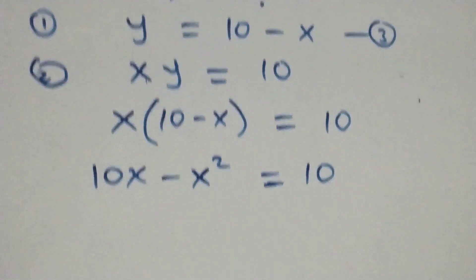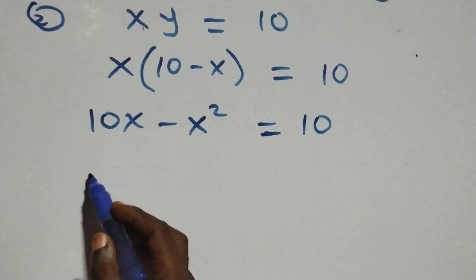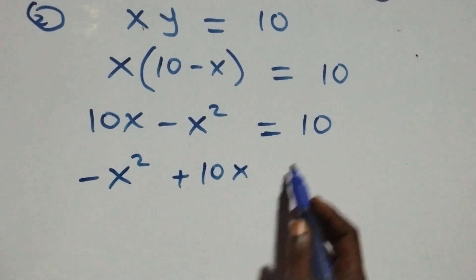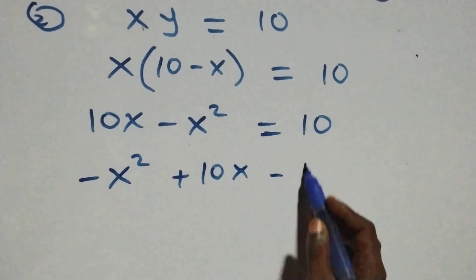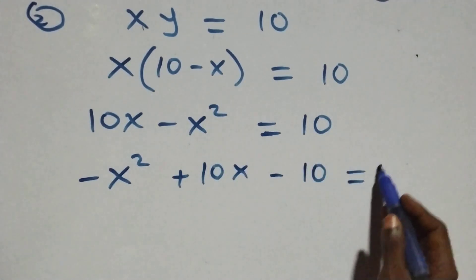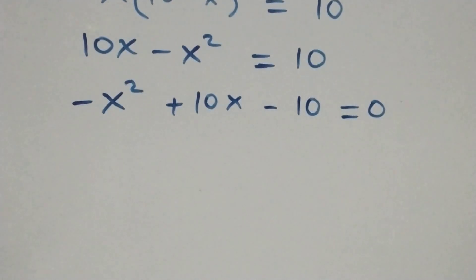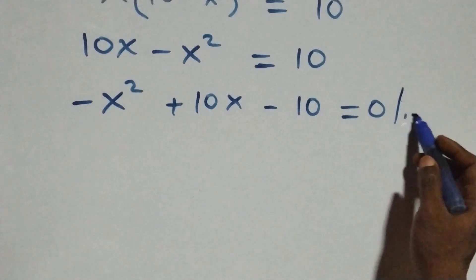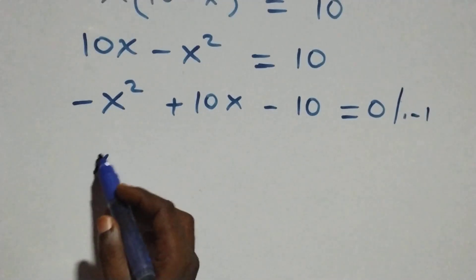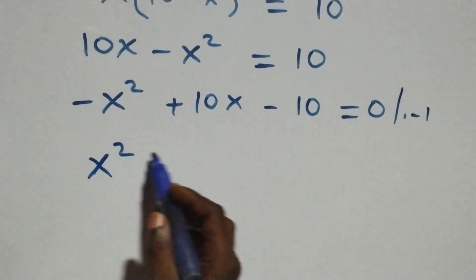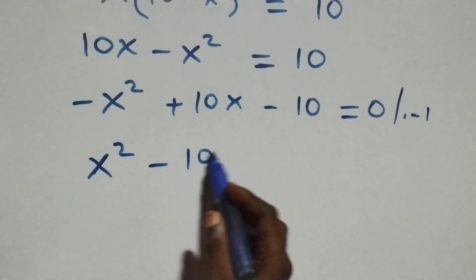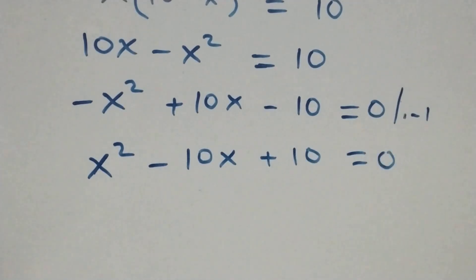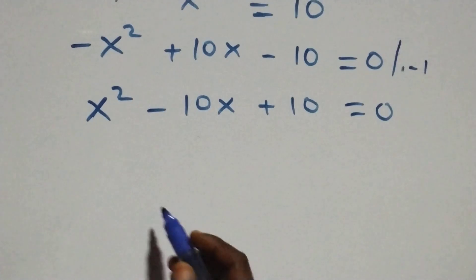When we rearrange, on this side we have negative x squared plus ten x, then we take the ten to the other side to get negative x squared plus ten x minus ten equals zero. We then multiply through by negative one, which gives us x squared minus ten x plus ten equals zero — a quadratic equation.